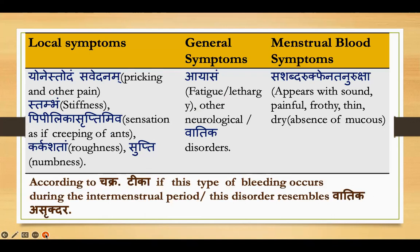According to Charak Samhita, the local symptoms mentioned are: Toda — meaning pricking type of pain — and Vedana, meaning pain in the vaginal region. Then Stambha, meaning stiffness. This stiffness can be both vaginal-originated as well as uterine-originated.